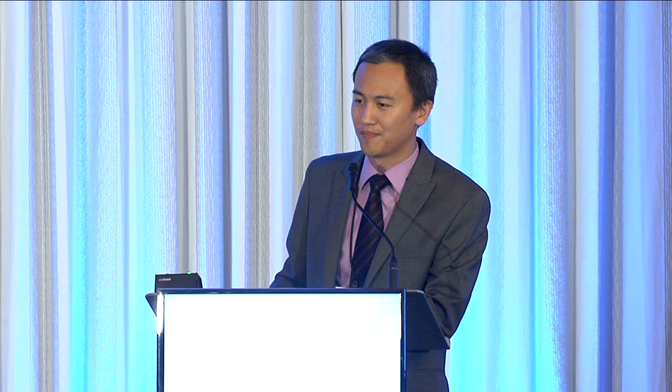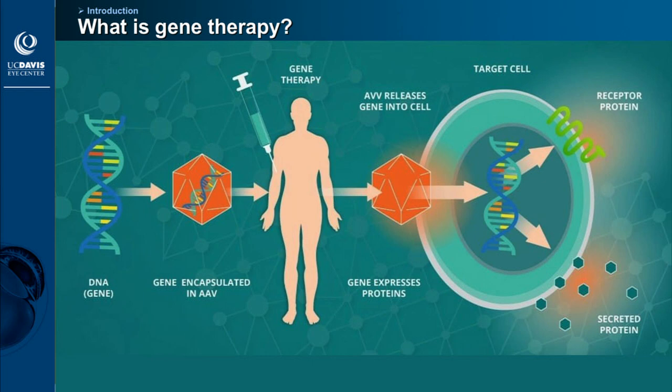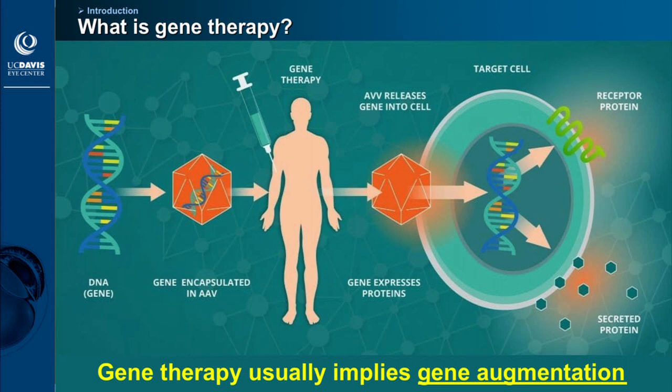These are my disclosures. Generally when we're talking about gene therapy, we're talking about gene augmentation or gene replacement therapy — the process by which a functional copy of a gene is packaged inside a viral vector, which is then delivered into a patient with an inherited retinal disease to replace the dysfunctional broken gene with a functional copy.